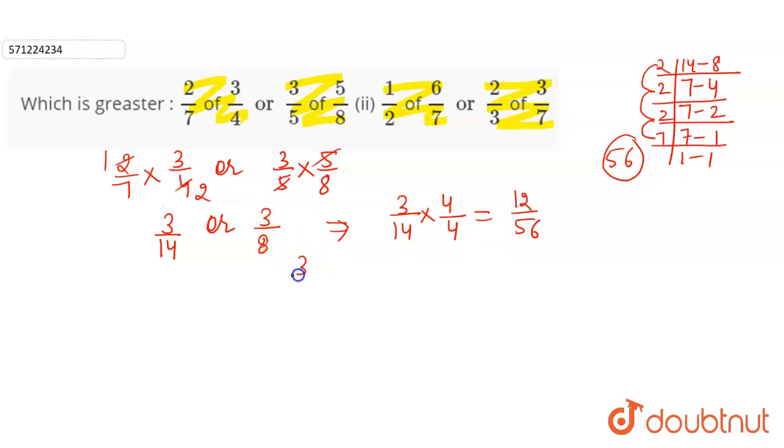Similarly, to make the fraction 3 by 8 equal in the denominator, we have to make the denominator equal to 56. So we have to multiply the fraction by 7. So 3 into 7 is 21 and 8 into 7 is 56.